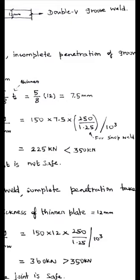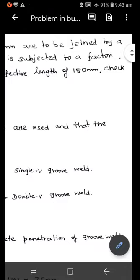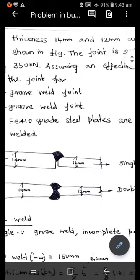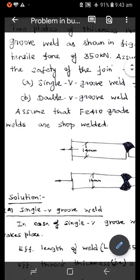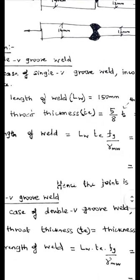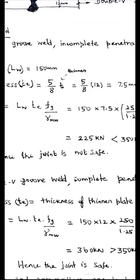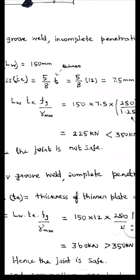If you calculate this value you can get the value as 225 kilo Newton. This divided by 10 power 3 is to convert the Newton into kilo Newton. But the load given in the problem is factored tensile force of 350 kilo Newton. But this single V groove weld will carry a load of up to 225 kilo Newton only, therefore hence the joint is not safe.